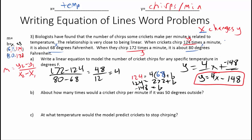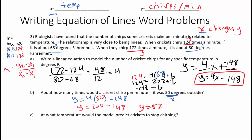Part B: about how many times would a cricket chirp per minute if it was 50 degrees outside? Temperature deals with x, so we plug in 50: y equals 4 times 50 minus 148. That gives 200 minus 148, so y equals 52. Since y deals with chirps per minute, the answer is 52 chirps per minute.